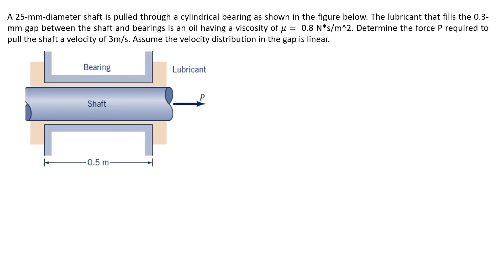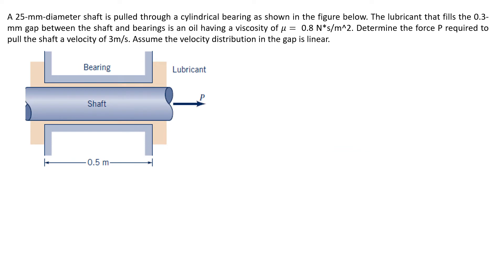Now with both the shear-strain rate relation and non-slip boundary condition, let's look at the shaft-bearing problem. There's a shaft pulled through a cylindrical bearing as shown in the figure below. The lubricant fills the 0.3 millimeter gap between the shaft and bearing. The lubricant is a fluid with viscosity of 0.8.